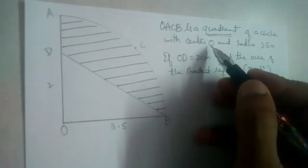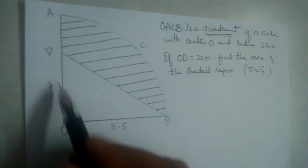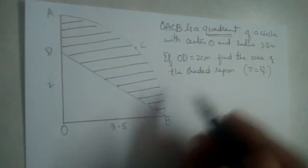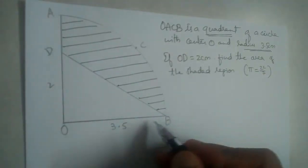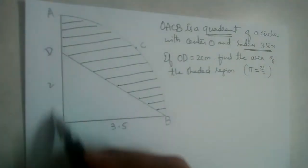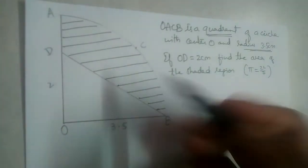Quadrant of a circle with center O. Center is O and OACB is a quadrant and the radius is 3.5 centimeters. If OD is 2 centimeters, find the area of the shaded region.